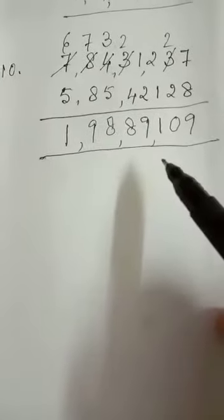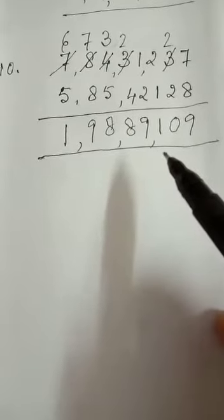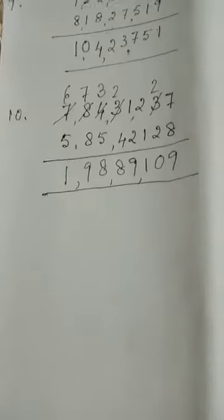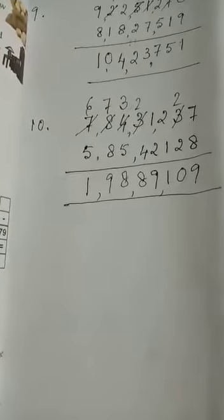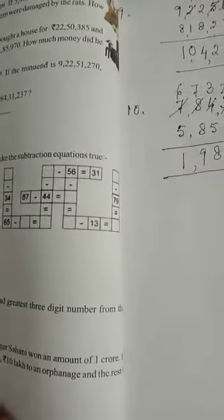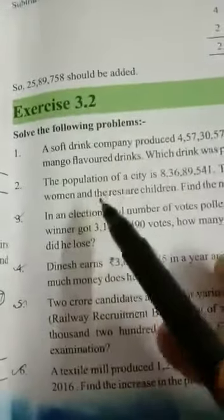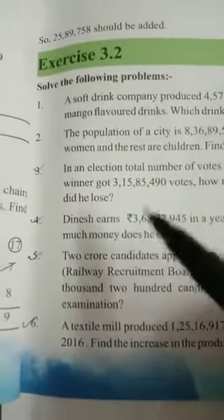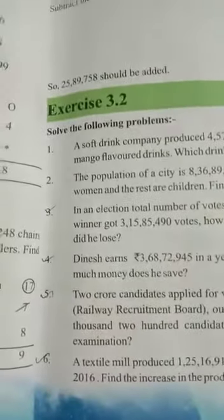So, the number that you have to add is equal to 1 crore 98 lakhs 89,109. All right. So, now, you mark few sums in your book for your practice. The same exercise, 3.2. You mark number 3, 4, 5, 6. These 4 sums, you practice at home. All right.